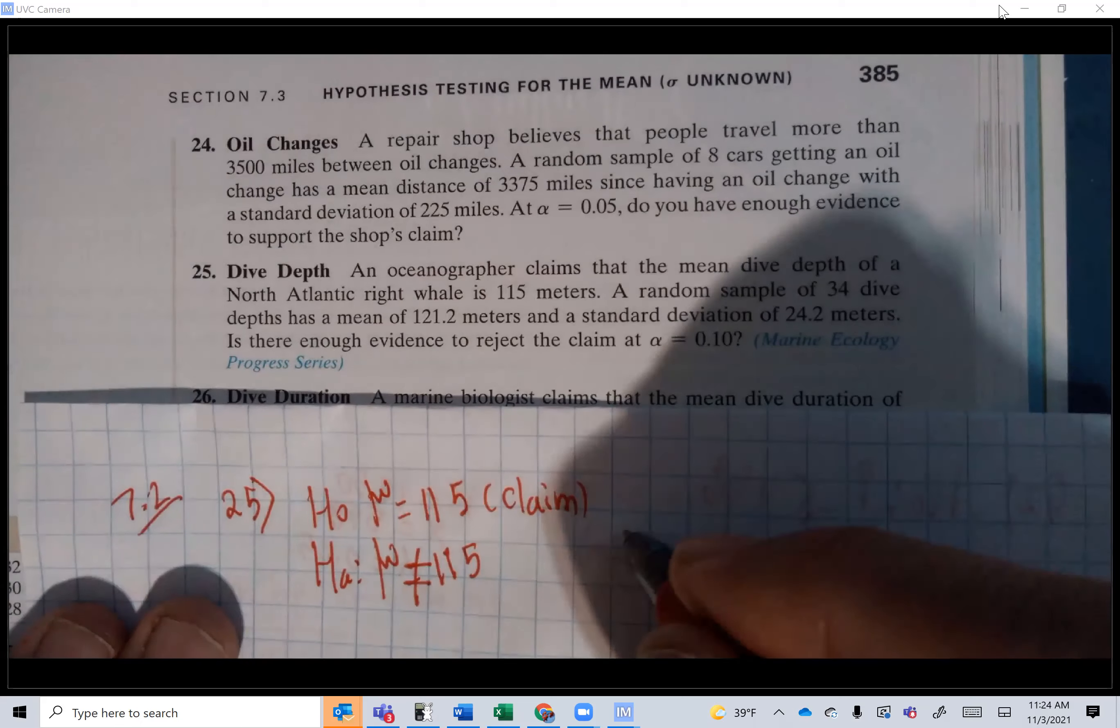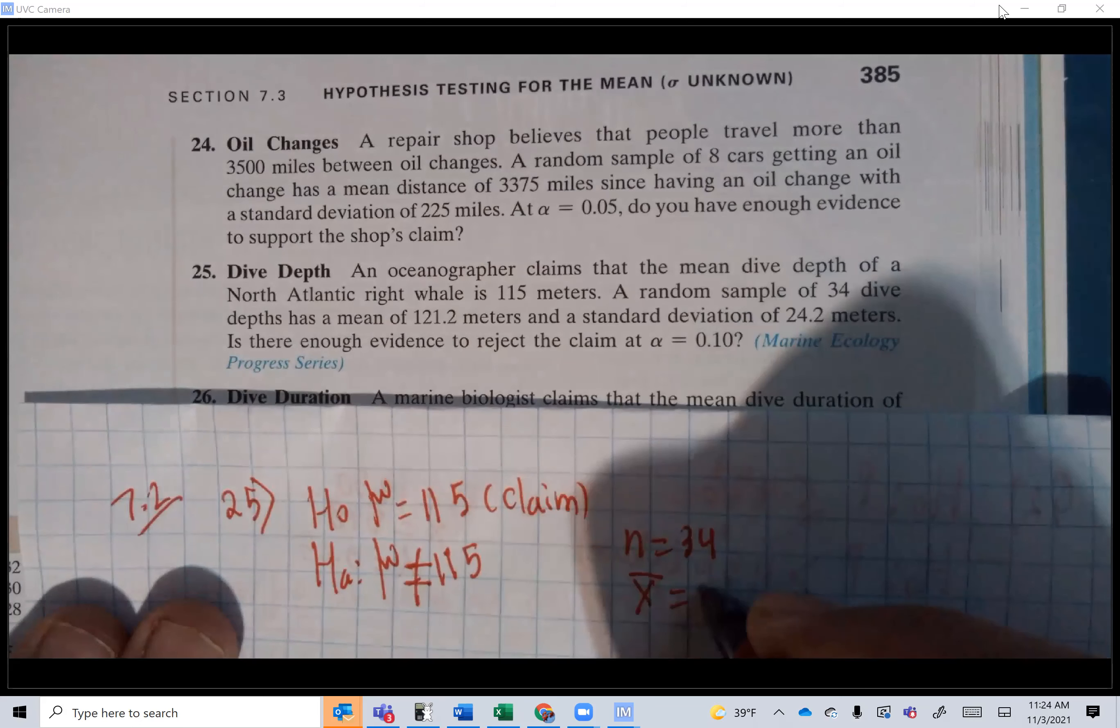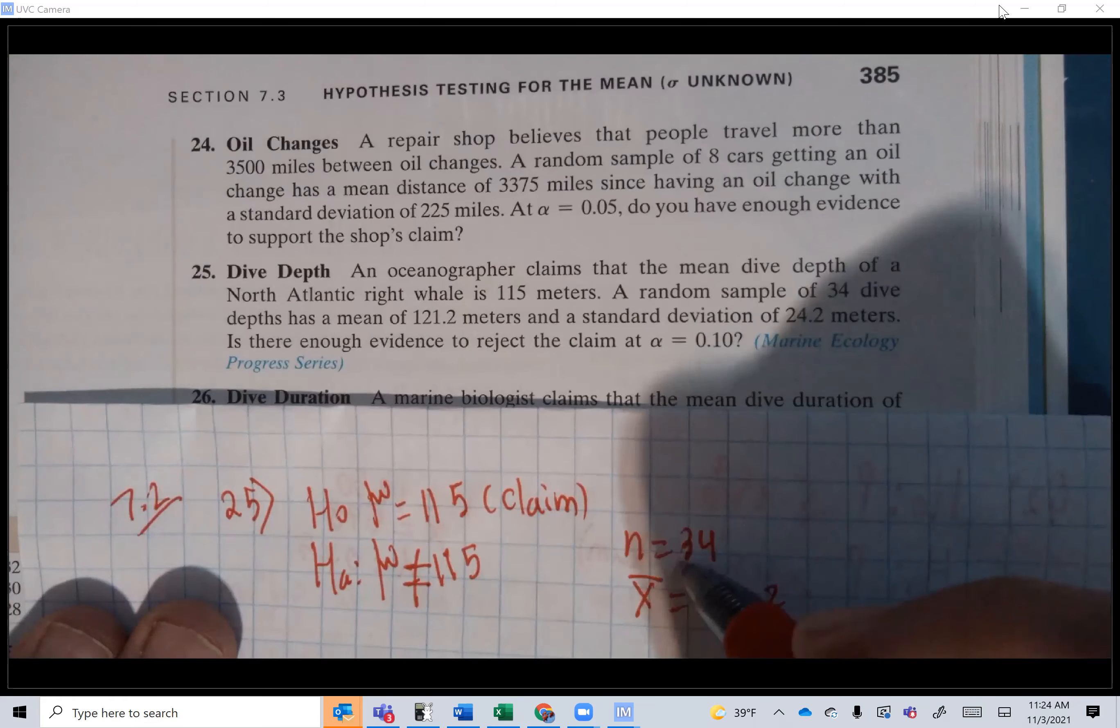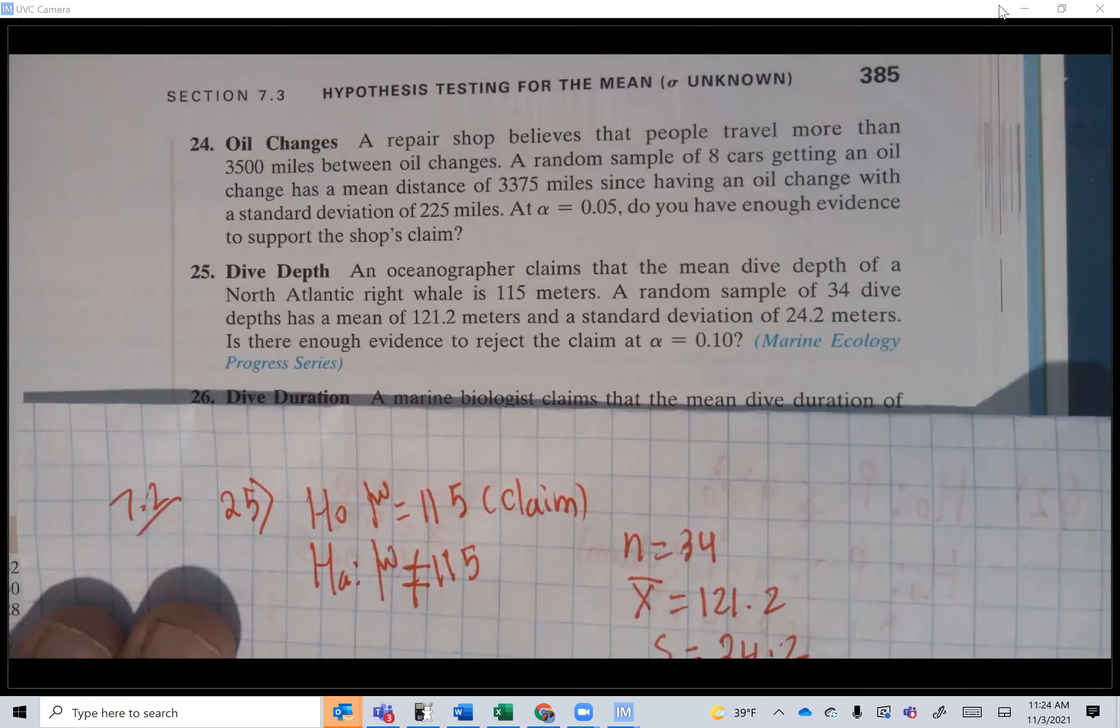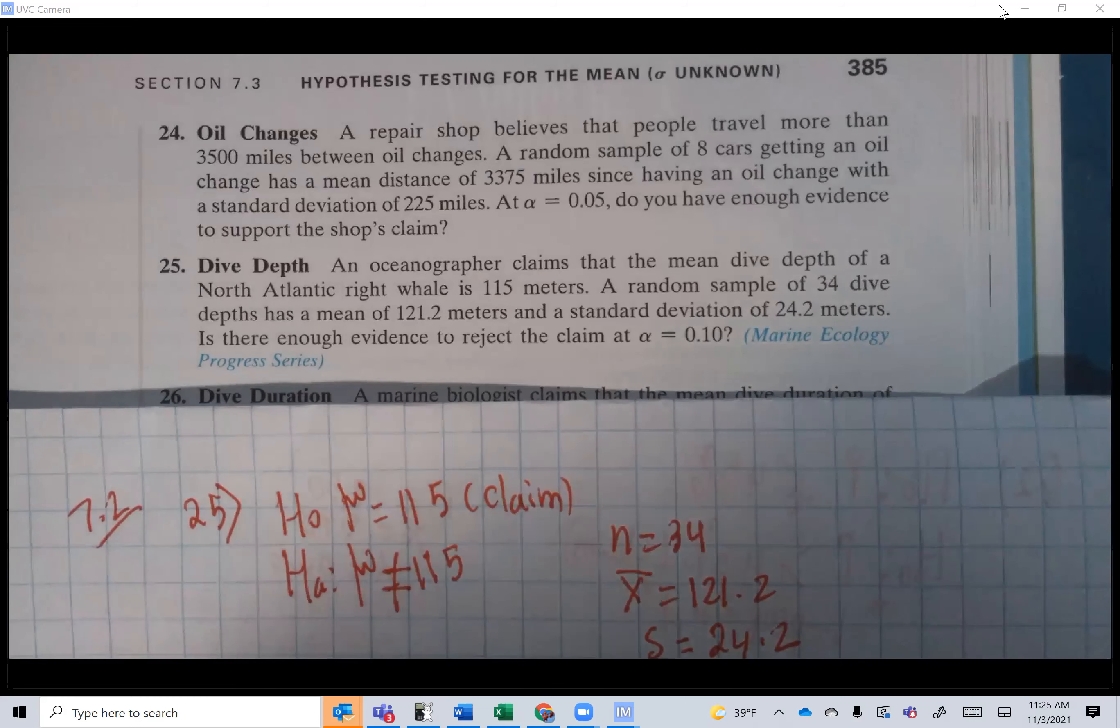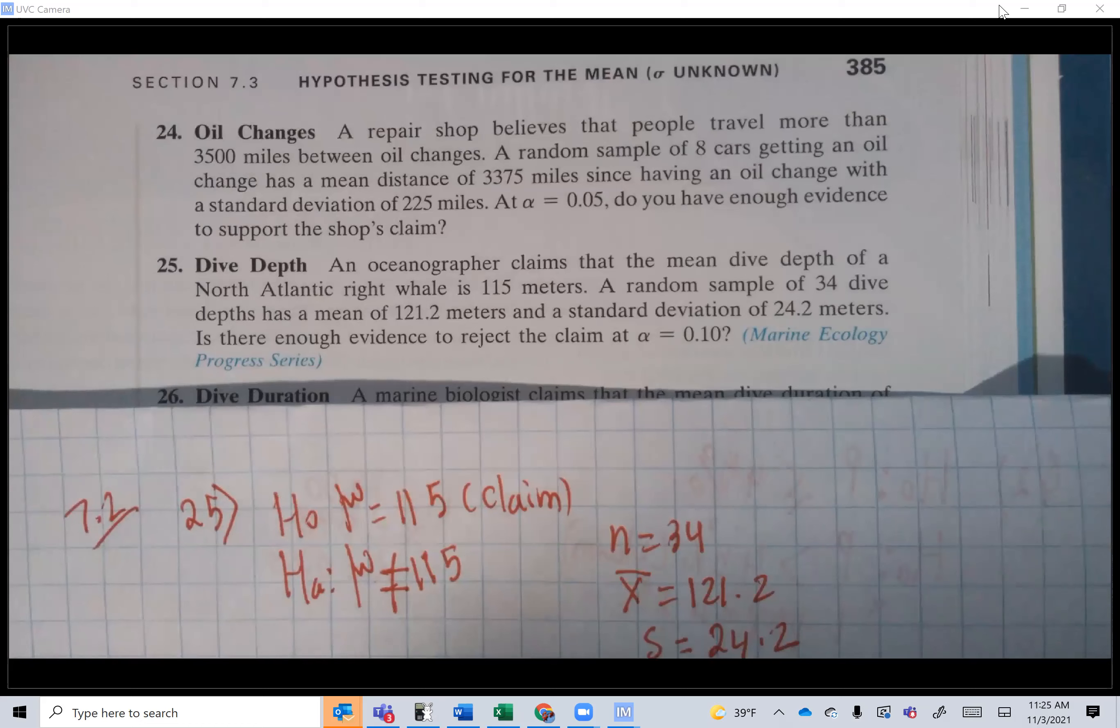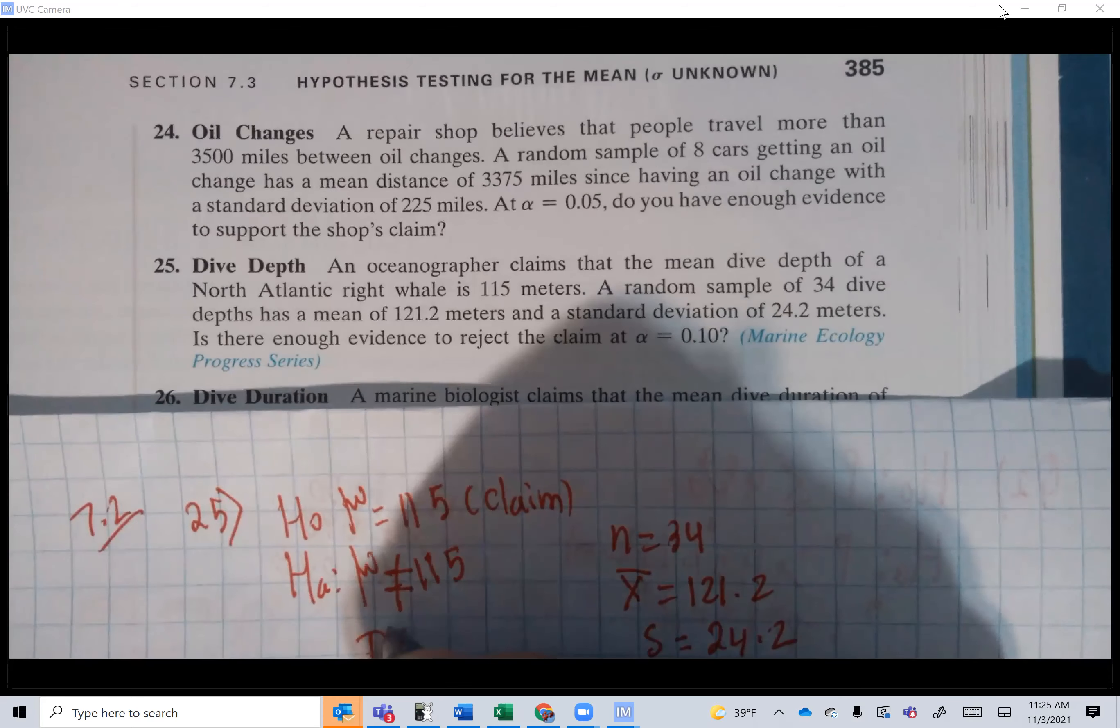A random sample of 34 dive depths has a mean of 121.2. So n is 34, x̄ is 121.2. Once he talks about the sample, it's an x̄. He says from a sample of 34 whales, depth times, the mean is 121.2. And a standard deviation, he didn't say sigma, he didn't say population standard deviation, just treat it as s, so it's a t-test. 24.2 meters. Is there evidence to reject the claim? Do you notice the question here is asking you if you can reject the claim? He will never ask you to reject the claim if the claim is not in the null hypothesis. If the claim is in the alternative, he will ask you if you can support the claim. Is there enough evidence to reject the claim at alpha equals 10%?